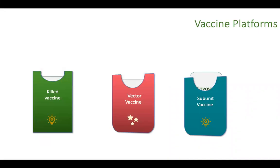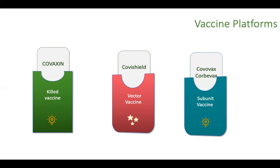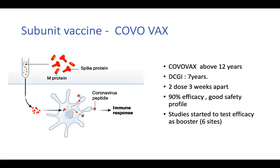Regarding vaccine platforms - we are aware of killed vaccine Covaxin and vector vaccine Covishield. A newer addition is the subunit vaccine Covovax or Corbivax. A subunit vaccine uses genetic recombinant technology to make spike proteins, which are harvested, combined with an adjuvant, and used as a vaccine. There is no whole live vaccine, no whole killed vaccine, and no genetic material - just the spike protein with an adjuvant. It has an excellent safety profile, similar to your HPV vaccine and hepatitis B vaccine, which are all subunit vaccines.